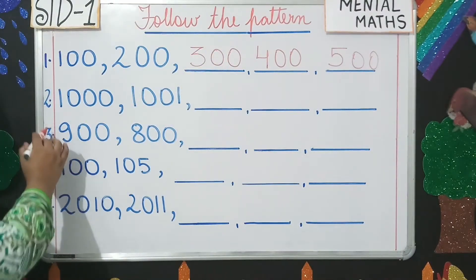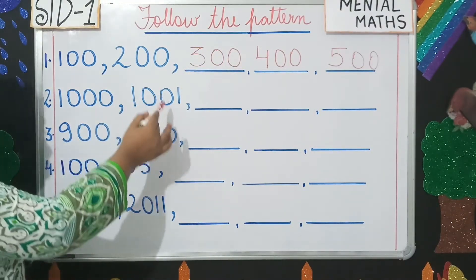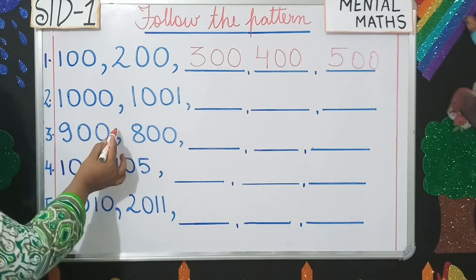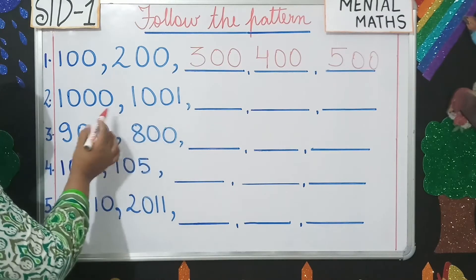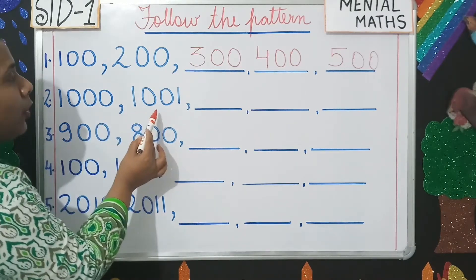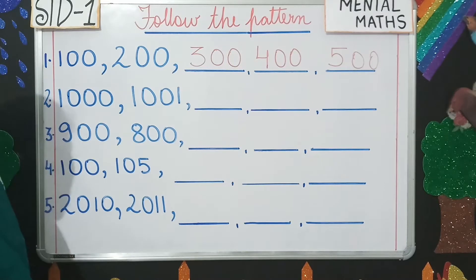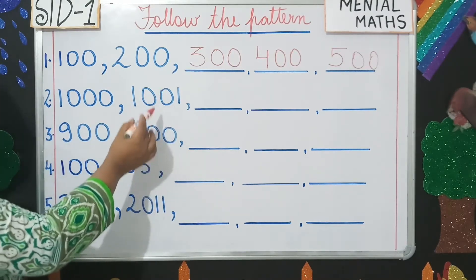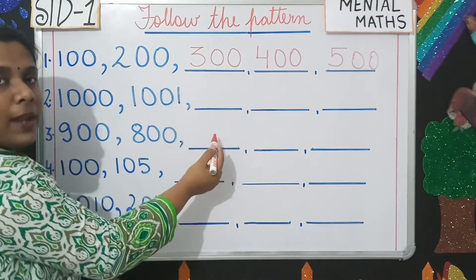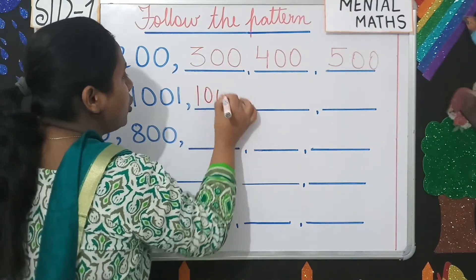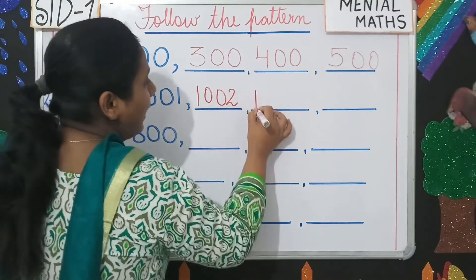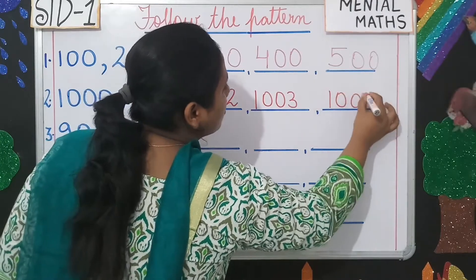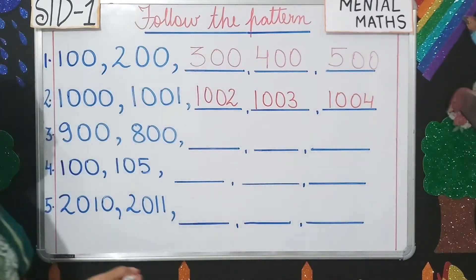Number two: 1,000 and 1,001. Here there is only one ahead number, which means there is a pattern of skip counting of 1. After 1,000 we have 1,001, so after 1,001 we'll have 1,002, then 1,003, and then 1,004. Is this clear?